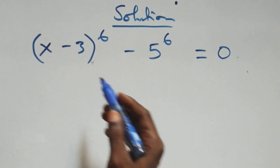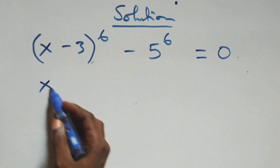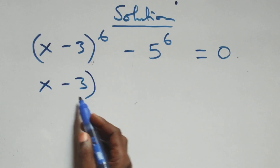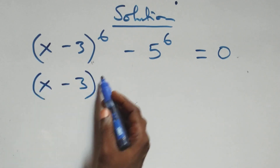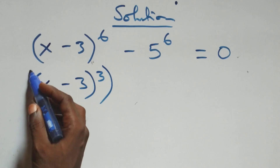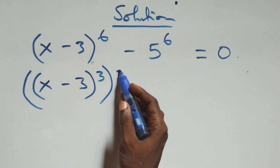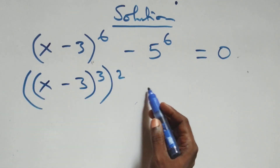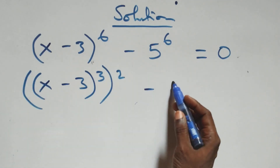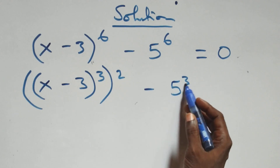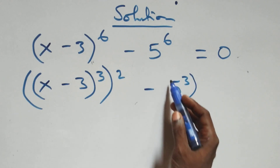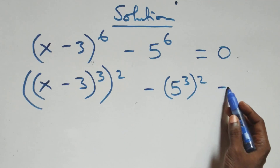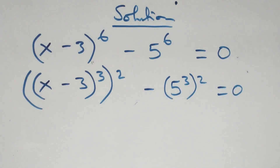Then here we can write this as x minus 3, raised to the power 3, then raised to the power 2. As 2 times 3 gives us 6, then minus also 5 raised to the power 3, then raised to the power 2, equals to 0 here.